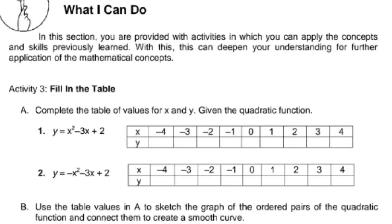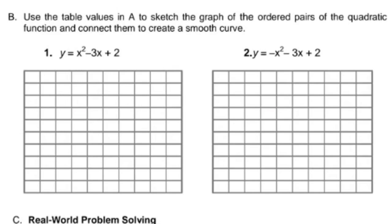What I Can Do: In this section, you apply the concepts and skills previously learned to deepen your understanding. Activity 3, Fill in the Table — Part A: complete the table of values for x and y given the quadratic function. Part B: use the table from A to sketch the graph of the ordered pairs, connect them to create a smooth curve, drawing the parabola.